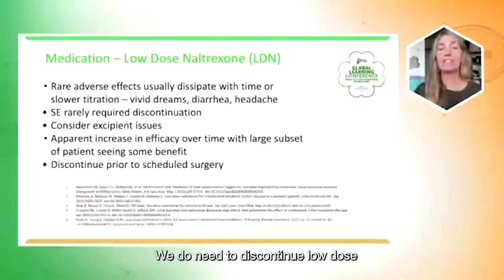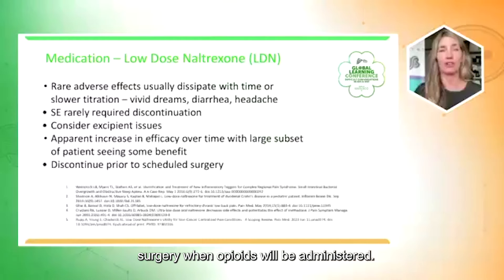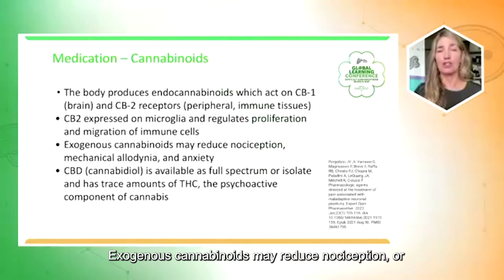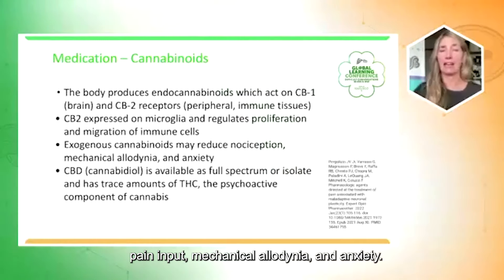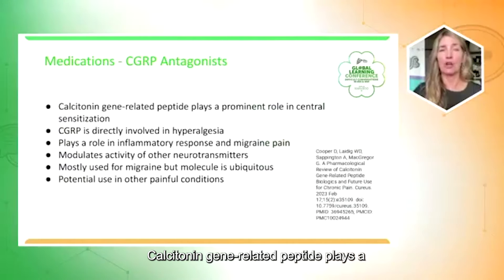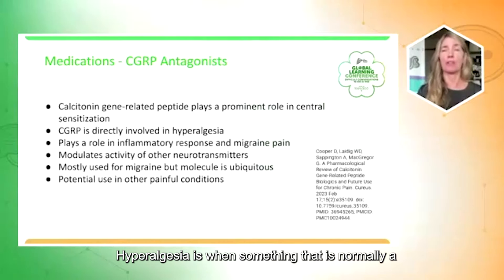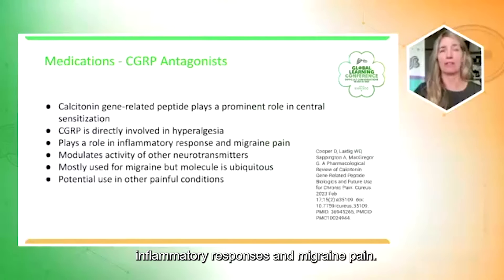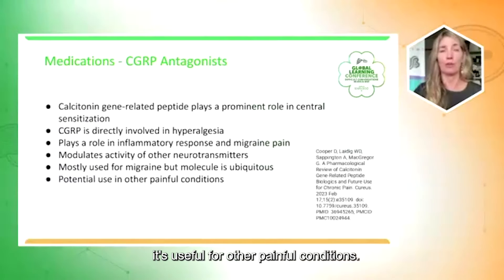There is an apparent increase in efficacy over time with a large subset of patients eventually seeing benefit. We do need to discontinue low dose naltrexone approximately seven days prior to scheduled surgery when opioids will be administered. The body also has an endocannabinoid system — CB2 is expressed on microglia and regulates proliferation and migration of immune cells. Exogenous cannabinoids may reduce nociception, mechanical allodynia, and anxiety. Allodynia is when something normally not painful actually causes pain. We also need to think about CGRP antagonists — calcitonin gene-related peptide plays a prominent role in central sensitization and inflammatory responses, particularly in migraine pain, though the molecule is ubiquitous and potentially useful for other painful conditions.